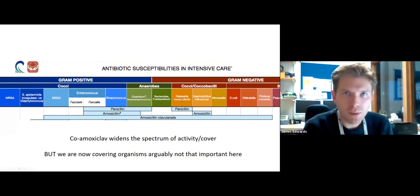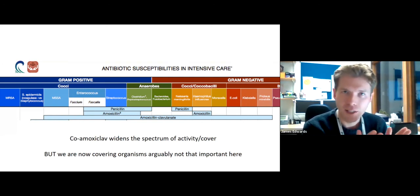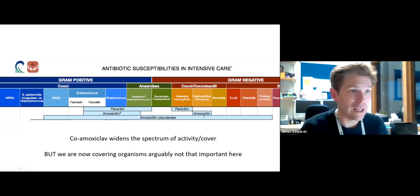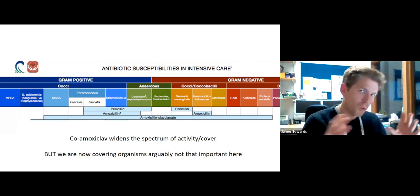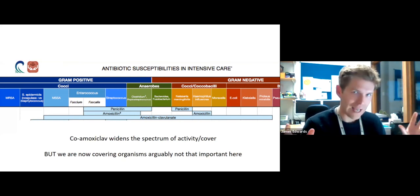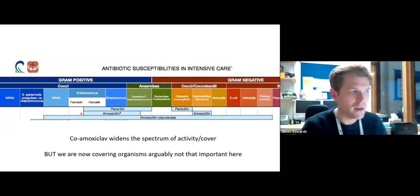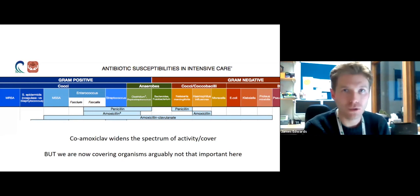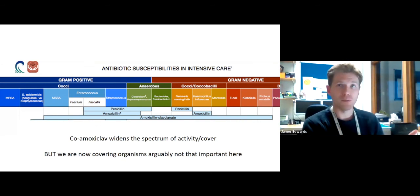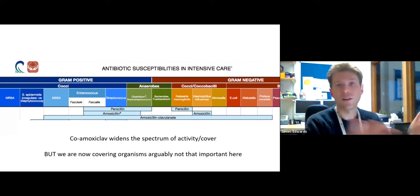So why didn't we just prescribe co-amoxiclav to begin with? It comes back to what you think is the most likely causative agent. In a child with community-associated upper respiratory tract infection, do you need to cover E. coli, Klebsiella, or Proteus? The answer is no — so you can prescribe amoxicillin with a more focused spectrum. Broadening the spectrum also kills commensal organisms, causing collateral damage to the patient's gut microbiome. We want to minimise that. Amoxicillin is prescribed here because it kills the most likely causative agents and leaves other organisms alone.